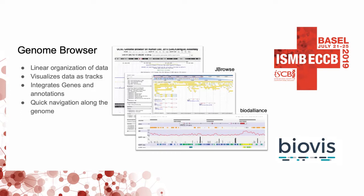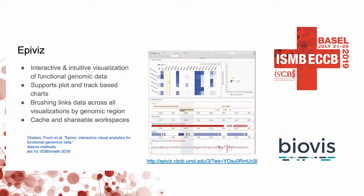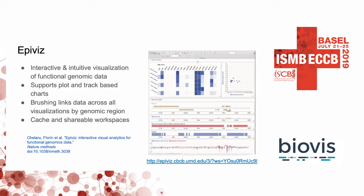Four years ago, my advisor Hector Corrado Bravo and a graduate student worked on EpiViz, an interactive visualization tool for functional genomic data. In addition to track-based visualizations, EpiViz also supports plot-based visualizations. For example, if you have gene expression data across different tumor or tissue types, it's more intuitive to look at that as a heat map or a caterpillar plot rather than a track. Brushing links all visualizations across the workspace by location, and you can create and share these workspaces.